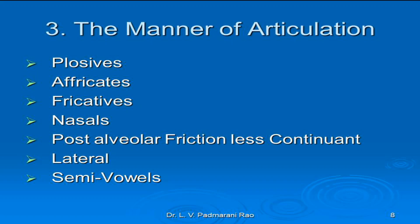The next is affricates. The active articulator makes contact with the passive articulator to form a complete closure; the soft palate is raised to block the nasal passage. Air pressure builds up behind the closure, but the closure is then slowly removed to release the air gradually — not a sudden release as in plosives but a slow release. Because of this slow separation of the articulators, affricates are characterized by slight audible friction, not by an explosive noise. The examples are CH and J.